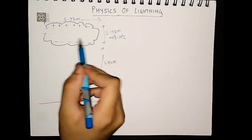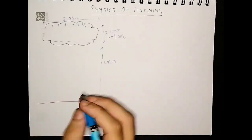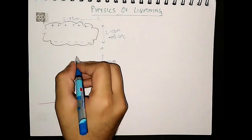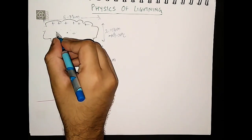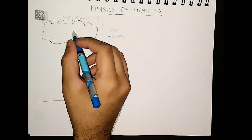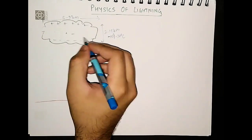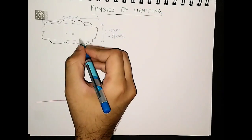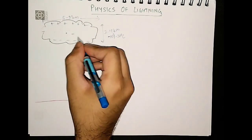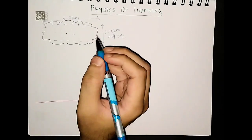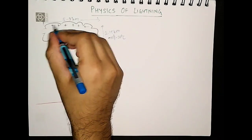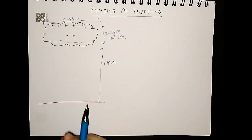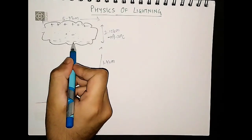The process why this charge separation occurs is very complicated and is still an area of research. But one argument is that the water vapors start rising as they enter the clouds. There are already dust particles and ice blocks inside the cloud and the atmosphere inside is very violent. There is a lot of current winds going on and because of friction, as these water vapors rise up, they collide with these particles and static friction gets created. They lose their electrons, the electrons stay behind, and the positive charge goes up. A large amount of charge gets accumulated.